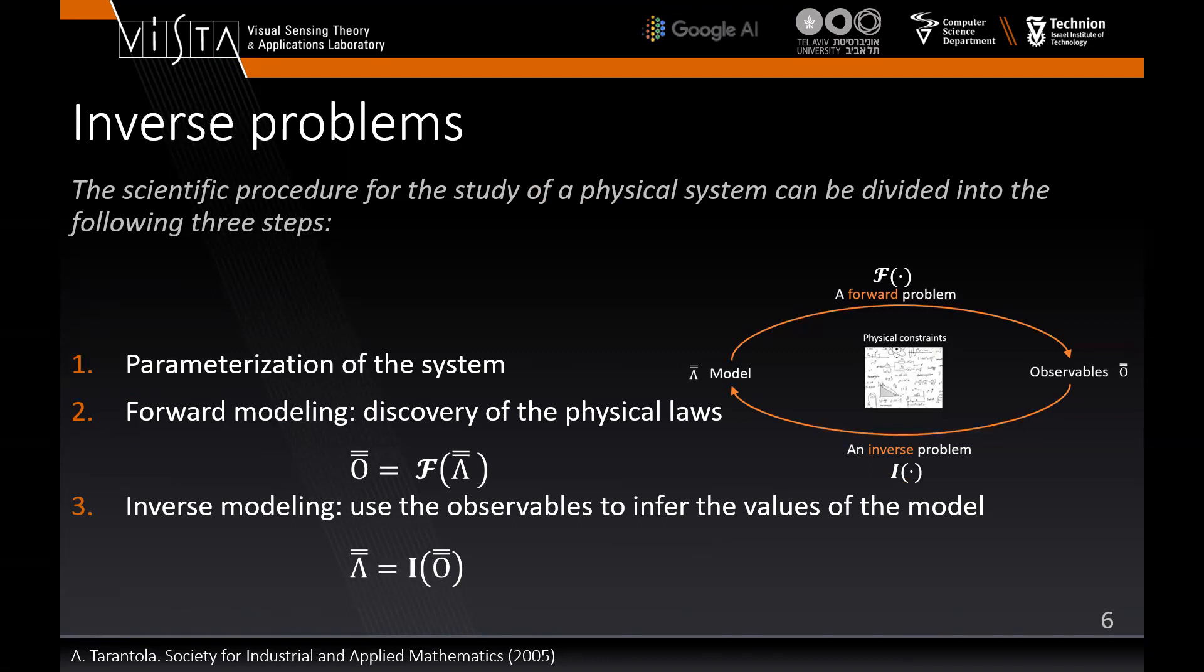The scientific procedure can be divided into the following three steps: discovery of minimal set of model parameters whose values completely characterize the system, discovery of physical laws allowing us to make predictions, and use of the actual results to infer the actual values of the model parameters.